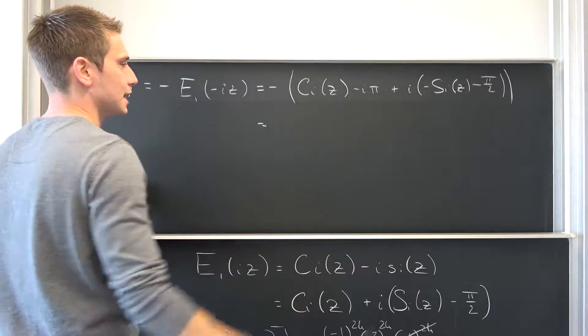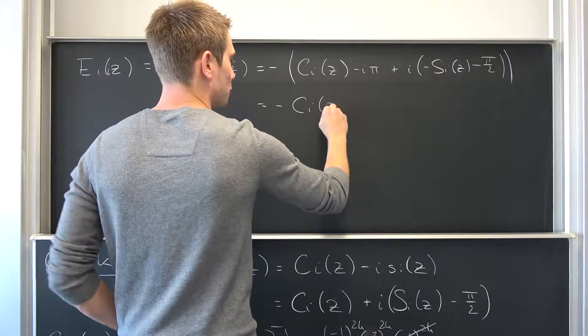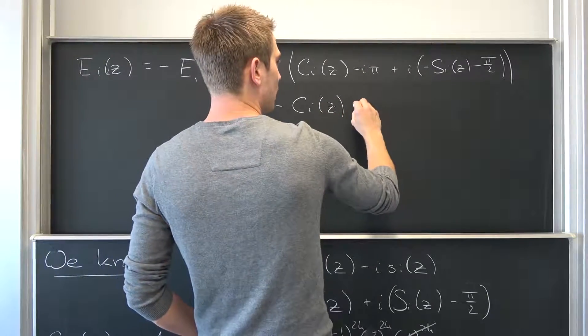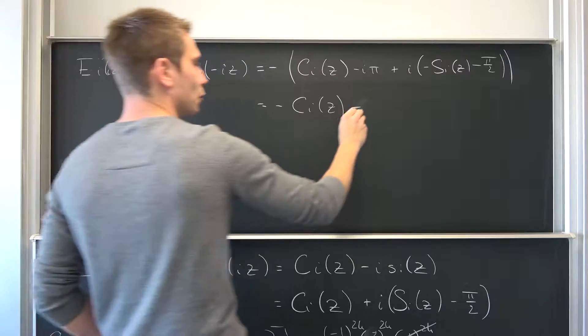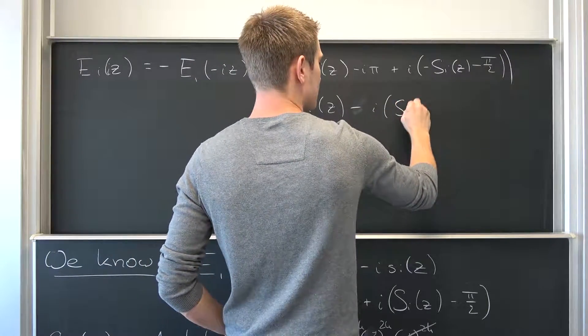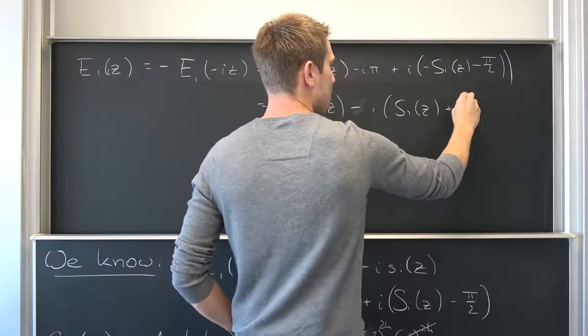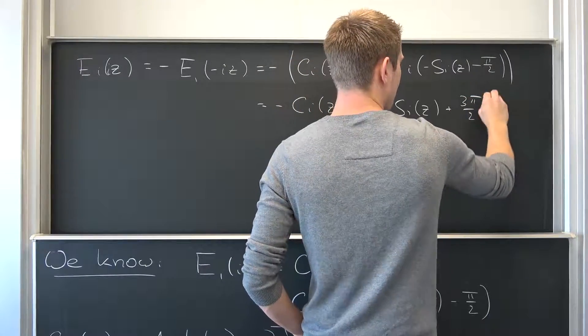Meaning overall this is going to reduce nicely to negative the cosine integral of z, and then - I'm going to bring the negative sine to the front - minus i sine integral of z plus 3 pi over 2.